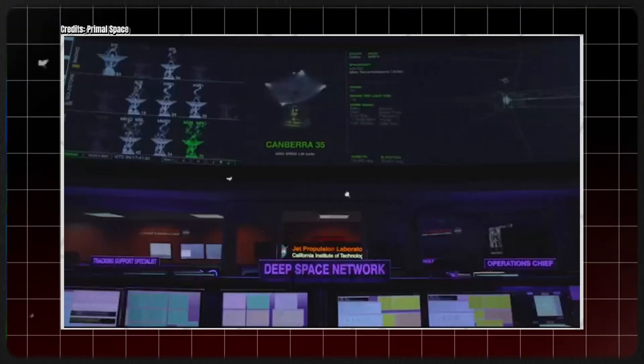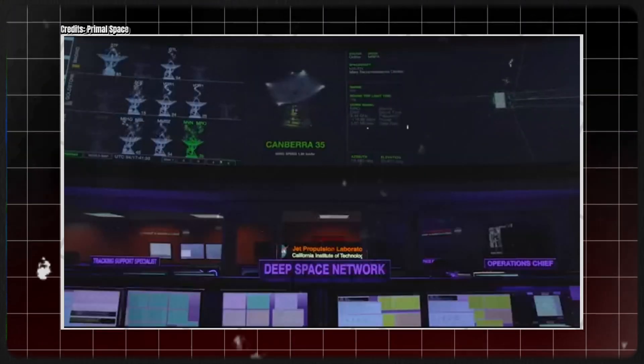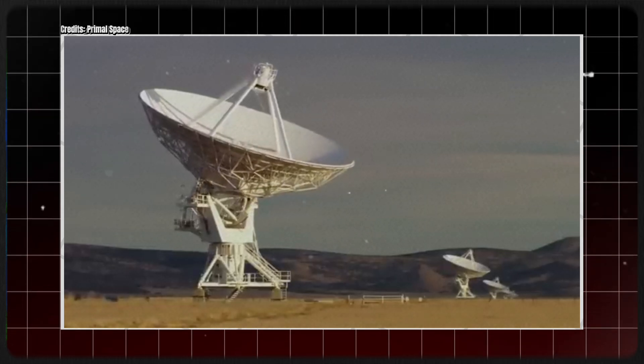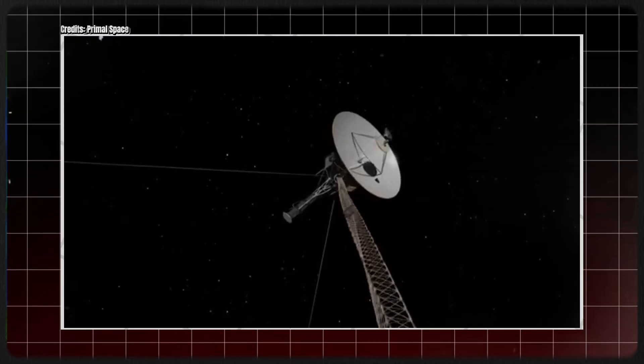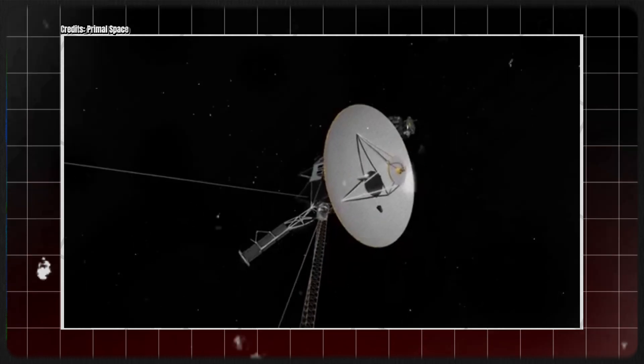Their only link to Earth is through the NASA Deep Space Network, a trio of tracking facilities spread across the globe, ensuring continuous communication with the spacecraft as the Earth rotates.